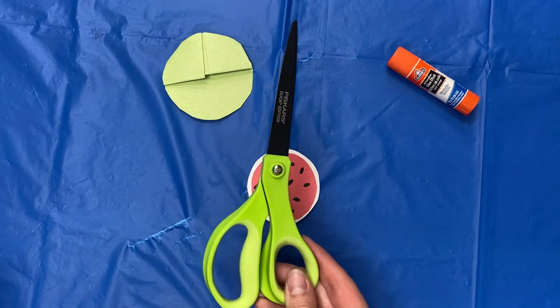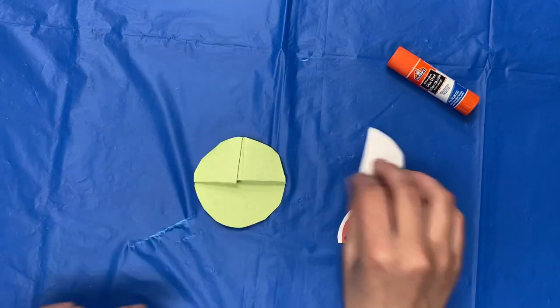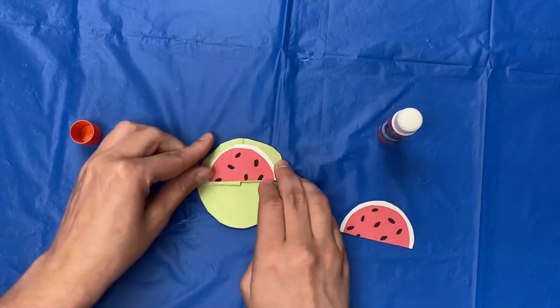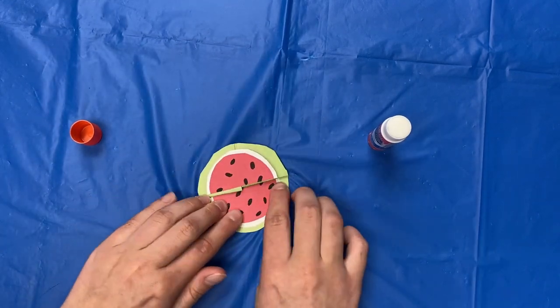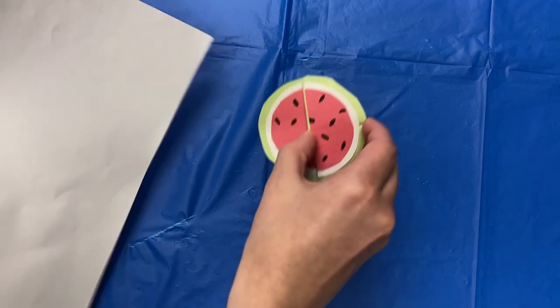Take your scissors and cut your watermelon in half. Then glue one half onto the top and one half onto the bottom. You can now place your bookmark on a book.